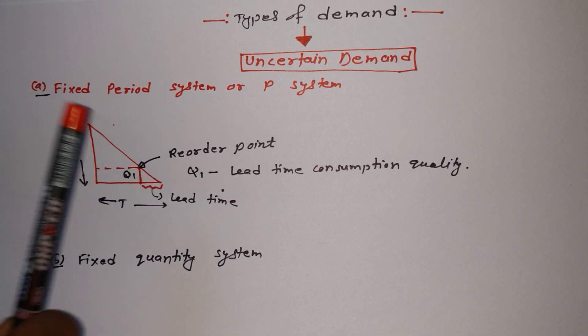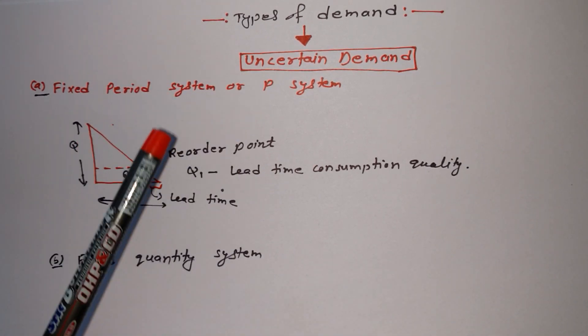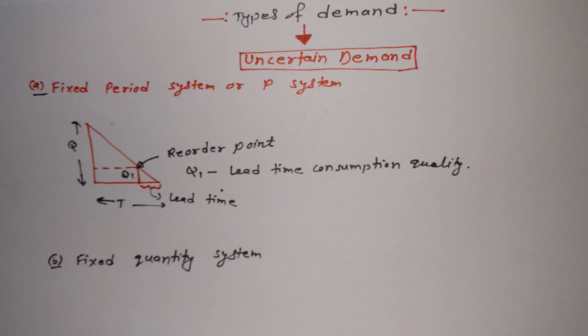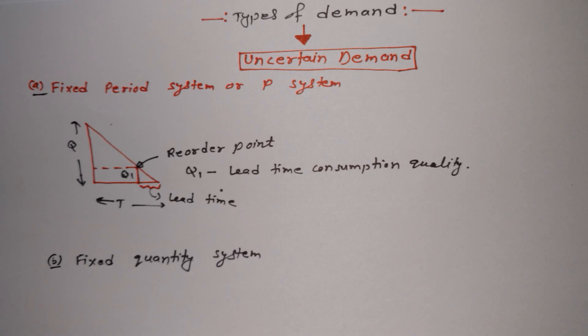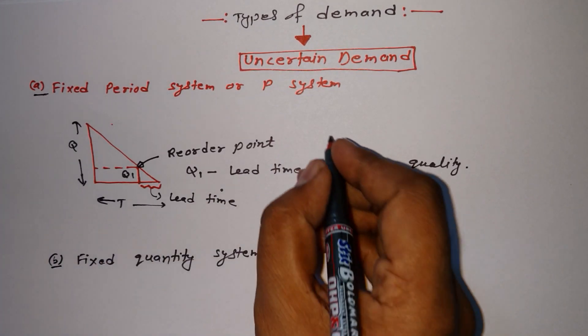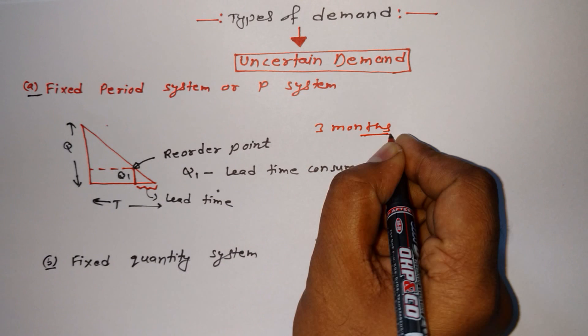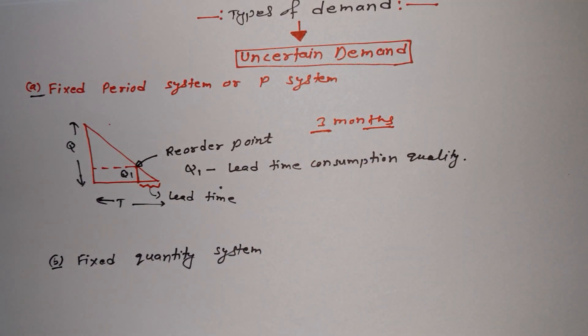We are studying about demand, that means it's all about inventory, ordering or demanding. So in the fixed period system, we order quantity in the respective fixed time. Just like we will keep ordering some quantity after three months, every three months.